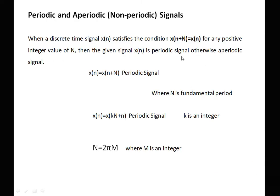First we will see the definition of a periodic signal. When a discrete time signal x(n) satisfies the condition x(n + N) = x(n) for any positive integer value of N, then the given signal x(n) is periodic; otherwise the signal is aperiodic or non-periodic. To be periodic, the condition is x(n) = x(n + N), where N is the fundamental period. The signal may also be represented as x(n) = x(kN + n), which is also a periodic signal where k is an integer.